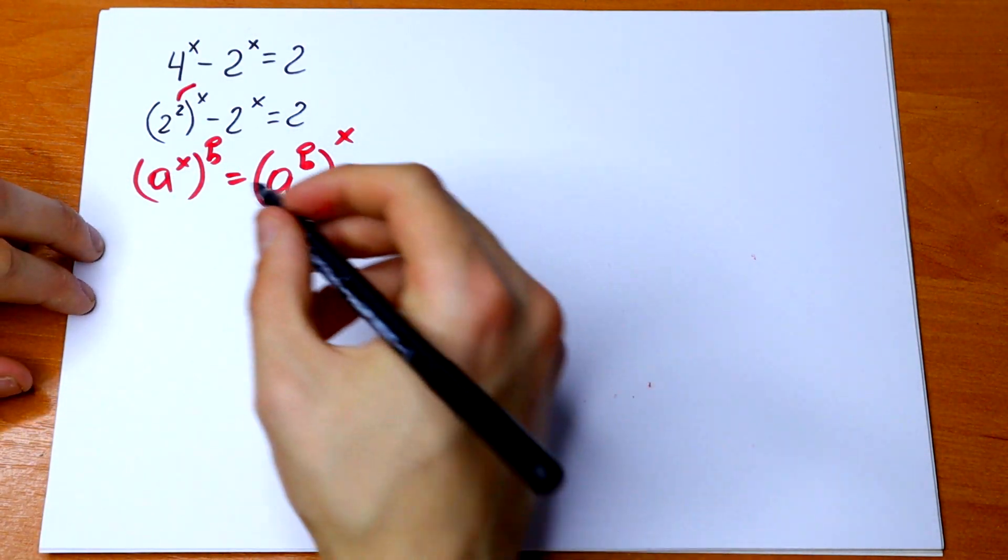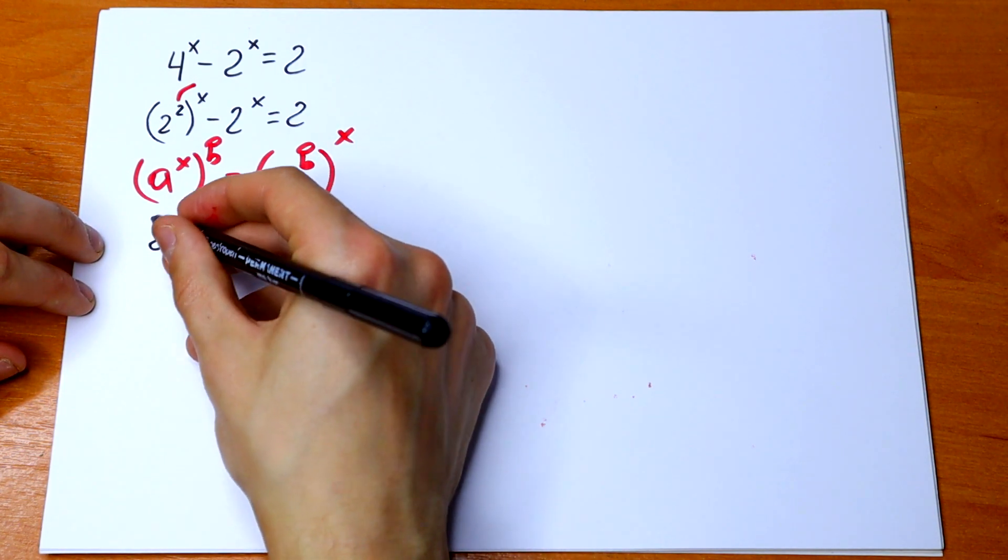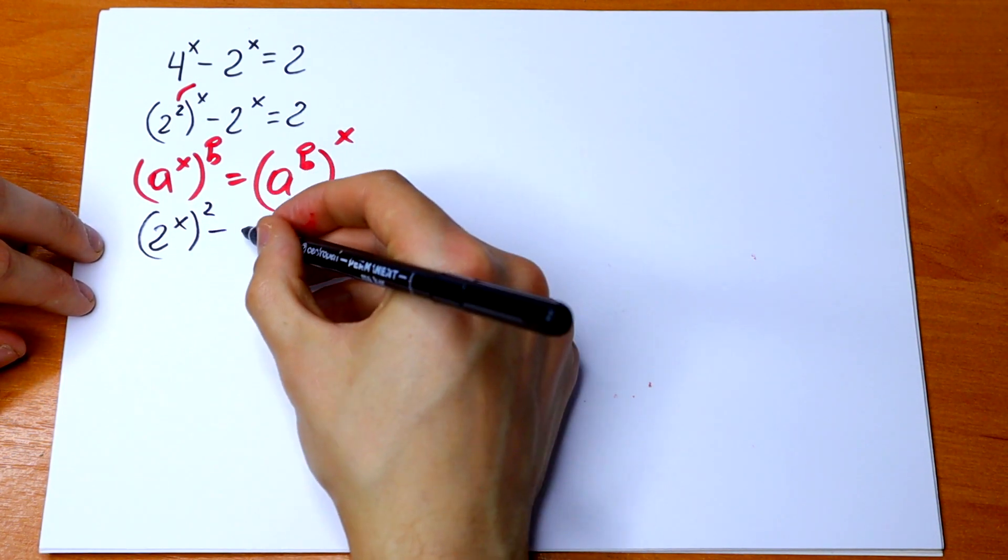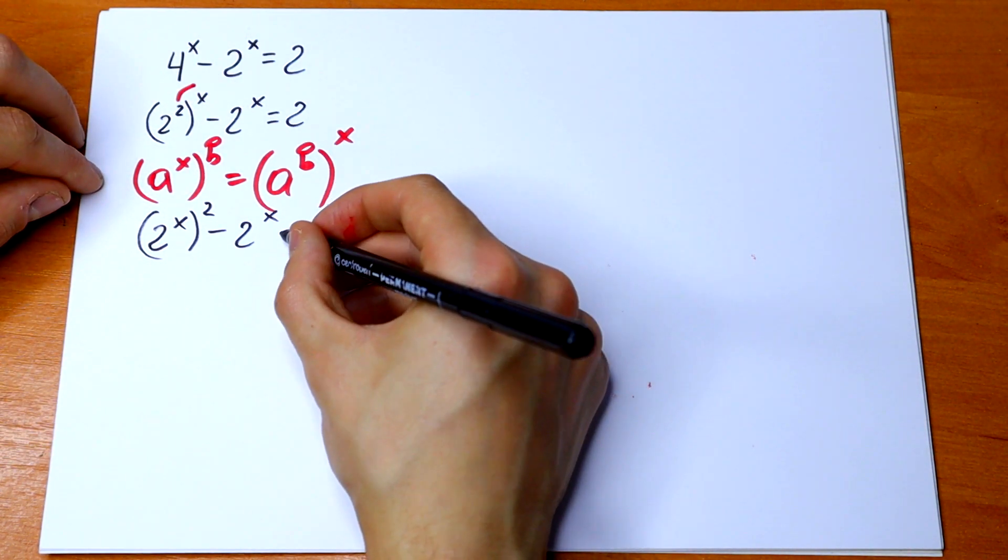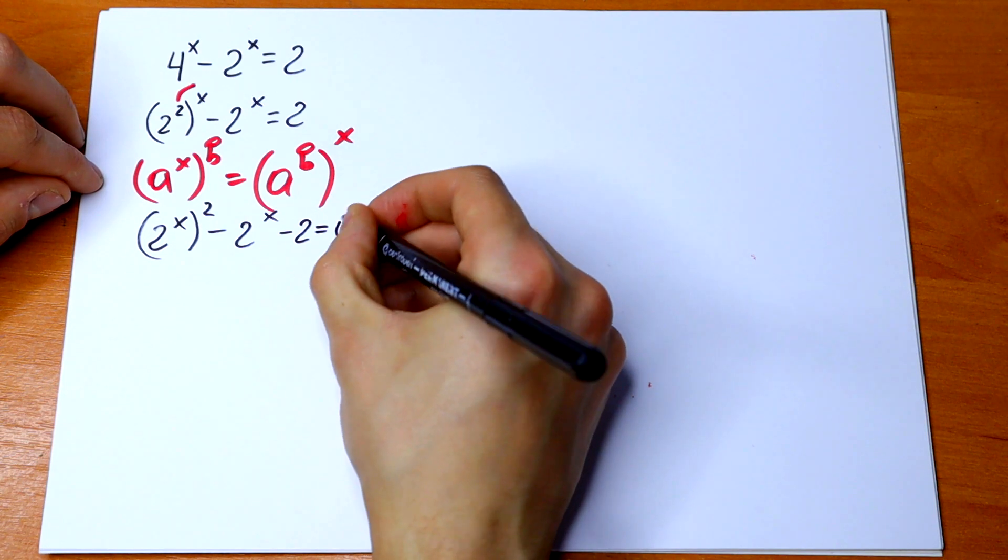Let's do this. We get (2^x)² - 2^x - 2 = 0.